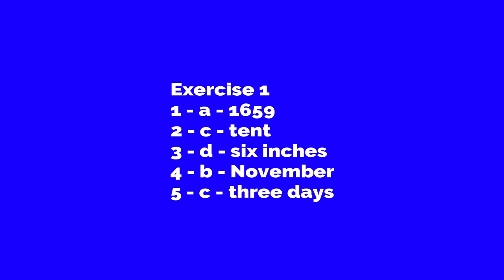Fourth: Crusoe saw some fair weather in the month of — a) December, b) November, c) September, d) October. Answer is b) November. Fifth: The journey homeward with the fruit parcel took Crusoe — a) five days, b) ten days, c) three days, or d) four days. Answer is c) three days.